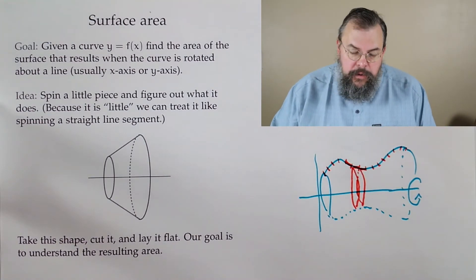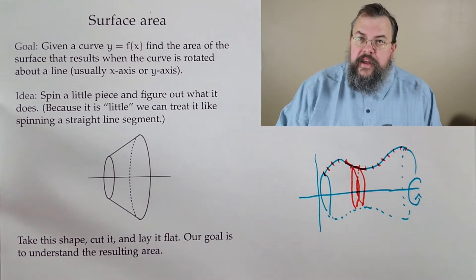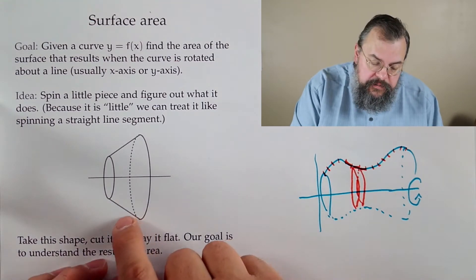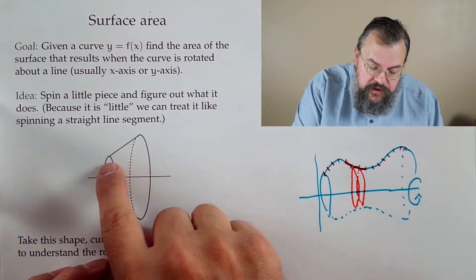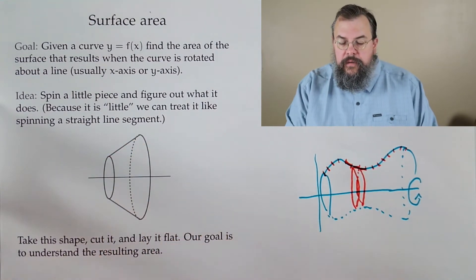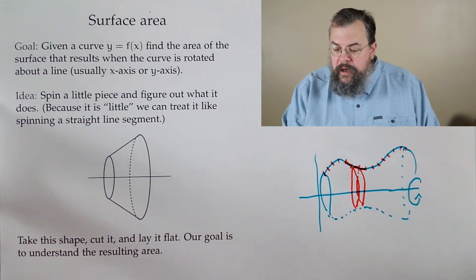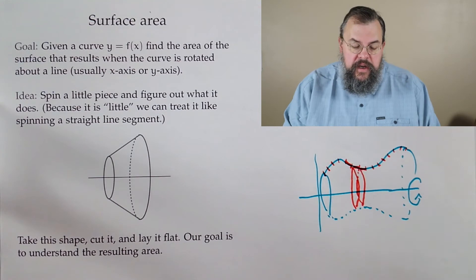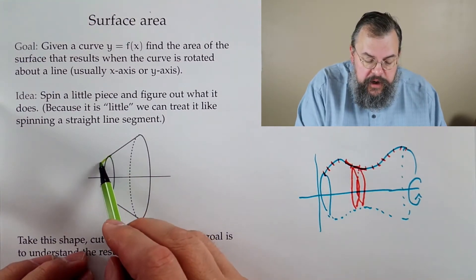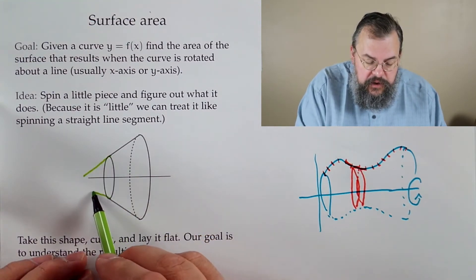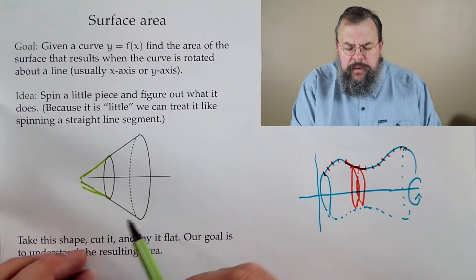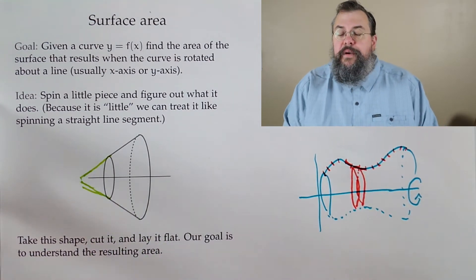Our basic shape is: we have a straight line, we spin it around, and what do we see? It's really like we spun part of a cone. You could extend those lines and see that we have a part of a cone.